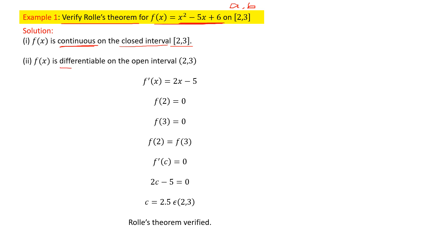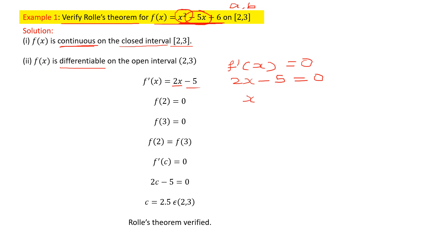Condition two: the function should be differentiable on the open interval (2, 3). Let us find the derivative. The derivative of x² gives 2x, and the derivative of -5x gives -5. So f'(x) = 2x - 5. Setting the first derivative equal to zero to find the critical point c: 2x - 5 = 0, giving 2x = 5, so x = 5/2.